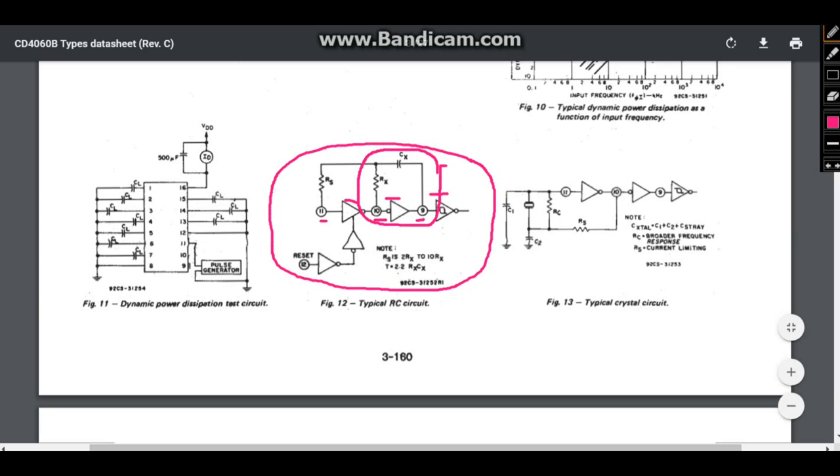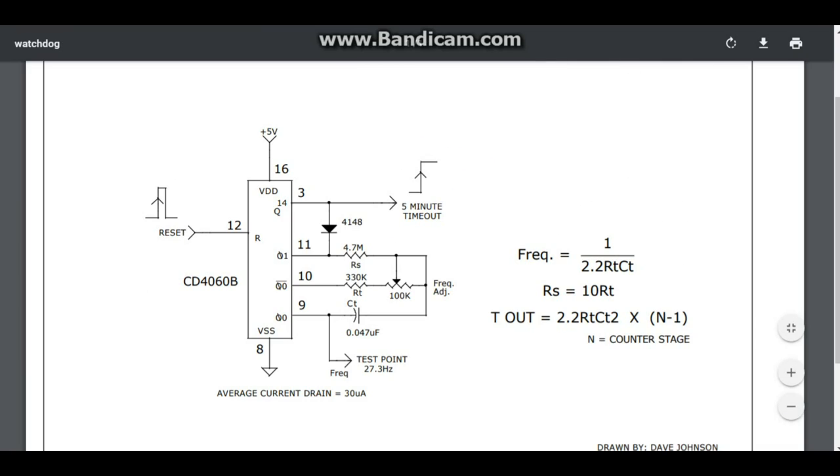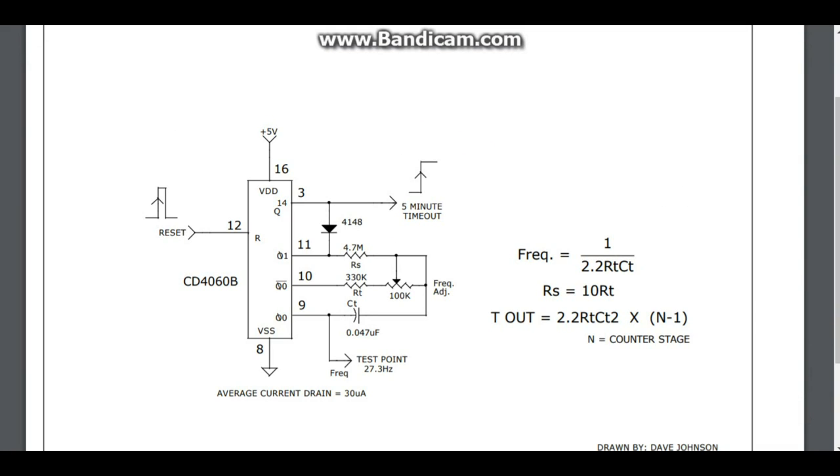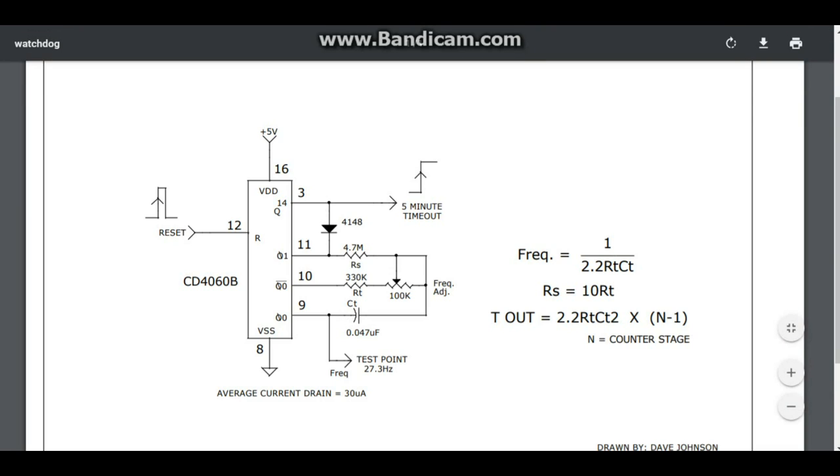So if we come over here, all right, here's another look. And this is a different circuit. I'm not using this circuit, but I just wanted you to see this formula here: 2.2 times RT times CT. So it's 2.2, there's CT, there's RT. That is our RC component, and that's how you find the frequency.